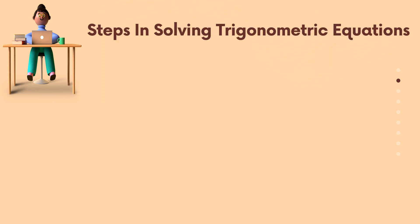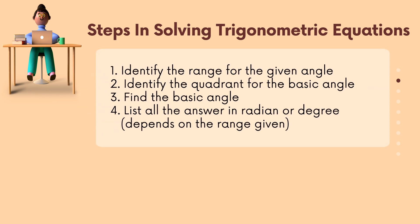There are 4 steps in solving trigonometric equations. Firstly, identify the range for the given angle. Secondly, identify the quadrant for the basic angle.